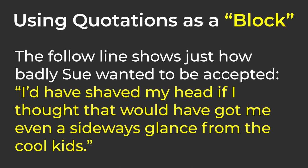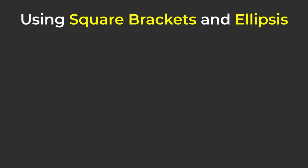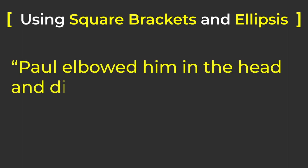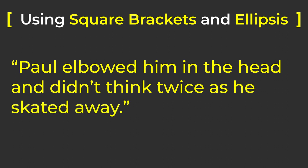Remember about going with the flow? Sometimes, in order to make a line flow smoothly, you need to make some changes or leave some things out. That's when we use square brackets and ellipses. If we need to change something in the quotation, we can put the changes in square brackets. For example, the original line in the text says, "Paul elbowed him in the head and didn't think twice as he skated away," but the reader doesn't know the other character's name, so we have to add it inside square brackets so that the sentence makes sense.